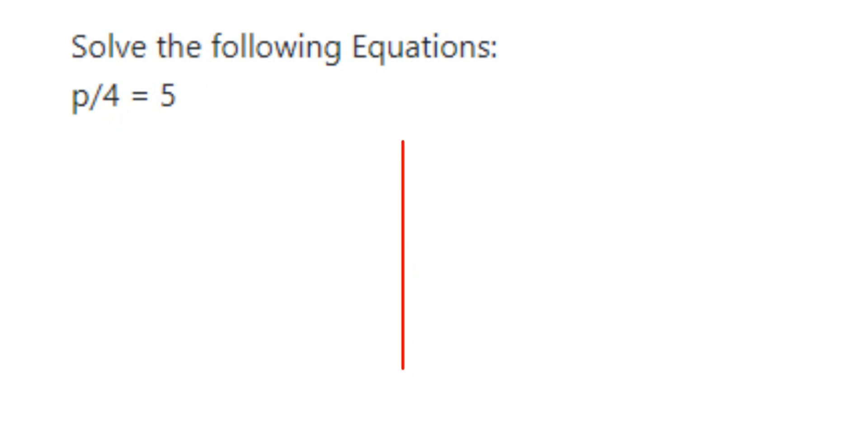In the balancing method, whatever operation we're doing, we're going to do on both sides. For example, here's the given equation: p/4 = 5. I don't want the 4, I want only the p value, so I want to remove this 4. Since 4 is in division, I have to balance it by multiplying, because the number will get cancelled only when you're multiplying.